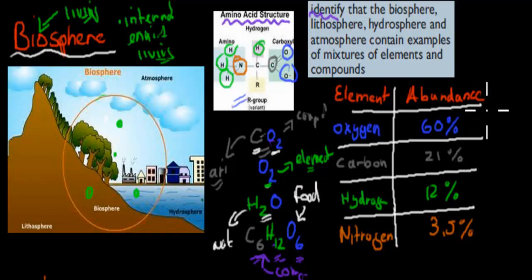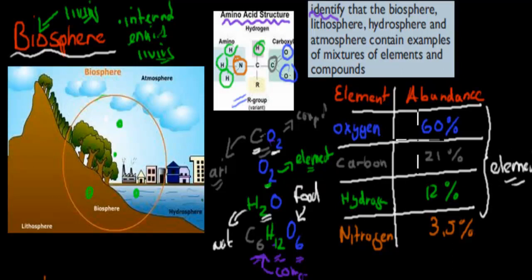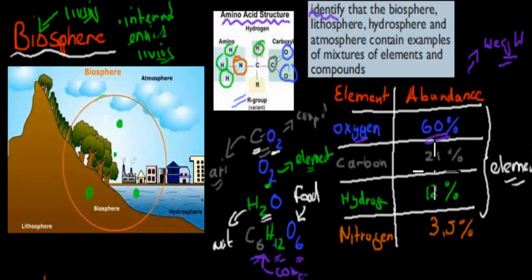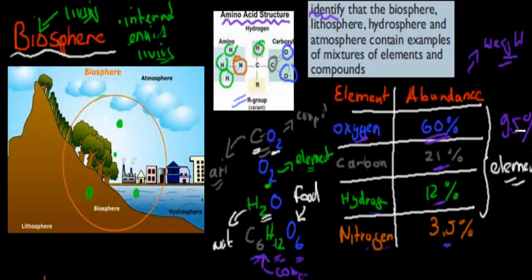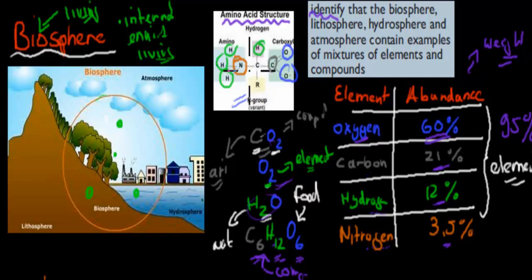This is the actual makeup of elements in our body by weight: 60% of our body is oxygen, 21% is carbon, 12% is hydrogen, and 3.5% is nitrogen — so all up about 95%. We have all the things that are in the biosphere: the food we eat, the elements we breathe in — oxygen, the water we drink, and the amino acids we eat for food.